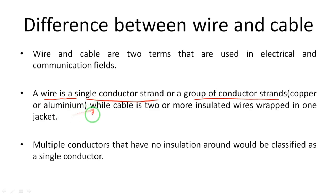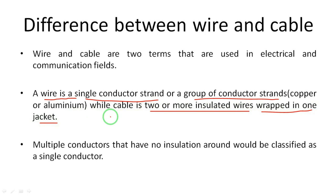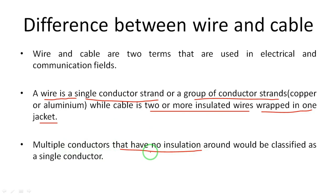A cable means two or more insulated wires wrapped in a jacket — there are multiple conductors in a single cable, and those conductors have insulation. One important point: if we have multiple conductors with no insulation, such as the distribution lines in our streets, those are called wires, because the main difference is that those conductors don't have insulation even though there are many strands.